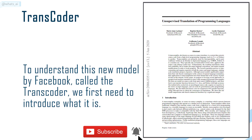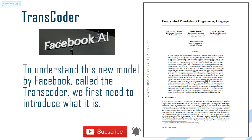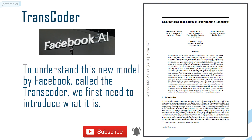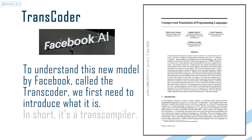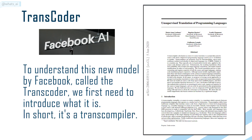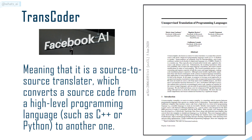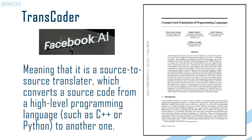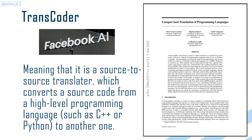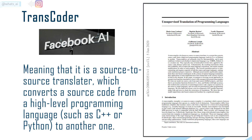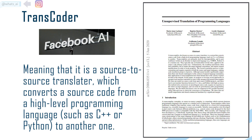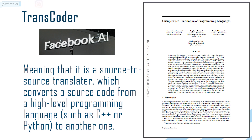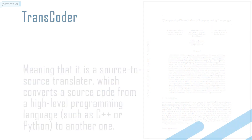To understand this new model by Facebook, called the Transcoder, we first need to introduce what it is. In short, it's a transcompiler, meaning that it is a source-to-source translator which converts source code from a high-level programming language, such as C++ or Python, to another one.